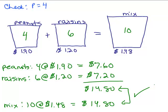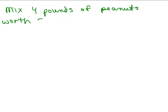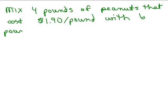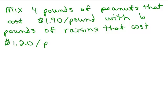So, that means our answer is that we want to mix 4 pounds of peanuts and 6 pounds of raisins. So, let's write our final answer here, mix 4 pounds of peanuts worth $1.90 per pound, or I might want to say the cost, with 6 pounds of raisins that cost $1.20 per pound.